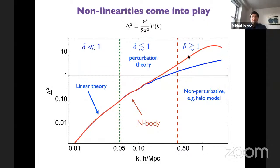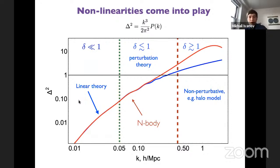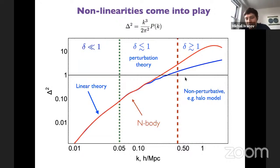Fortunately there are different regimes, and these non-linearities can be tackled with different methods. I'm showing the dimensionless matter power spectrum Δ² as a function of wavenumber k. On very large scales (small k), the power spectrum is much smaller than unity — we're in the linear regime where linear theory does a good job. Here the distribution of matter can be described with the output of linear Boltzmann codes, just as we use for the CMB.